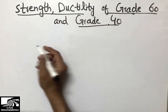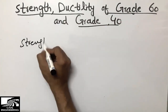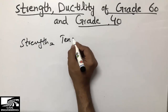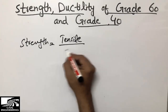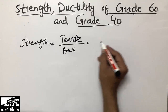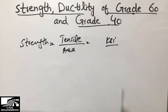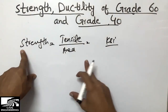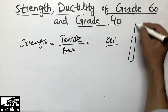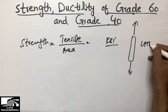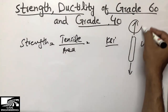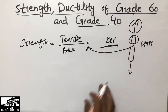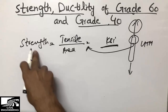First, I want to describe strength and how it relates to the grade. As we know, strength is equal to the load applied on the steel bar divided by the area of the steel bar. We call it strength, generally presented in units of K psi (kips per square inch). If a steel bar is pulled in a UTM (Universal Testing Machine), dividing the applied load by the area gives us the tensile strength in K psi.